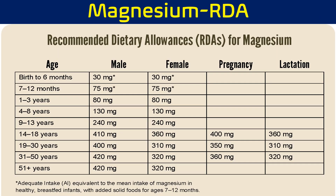Regarding the RDA value of magnesium: from birth to six months, roughly 30 mg is required. As aging progresses, the body requirement slowly increases and can go up to 420 mg. During pregnancy and lactation, the concentration requirement is slightly increased. For females aged 19 to 30, a non-pregnant woman requires 310 mg, while a pregnant woman requires 350 mg. For ages 31 to 50, non-pregnant women require 320 mg, while pregnant women require 360 mg.